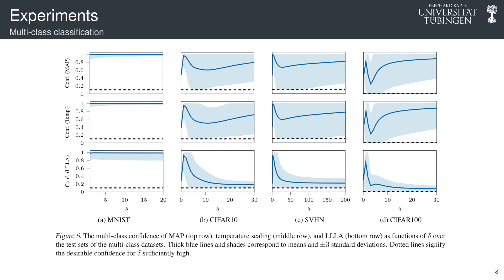And actually, this property also happens, can be observed in the multi-class classification case that is using the standard image classification dataset. On CIFAR-10, SVHN, and CIFAR-100, we observe that the confidence also goes to uniform confidence, which is 1 over k, where k is the number of labels in the dataset.